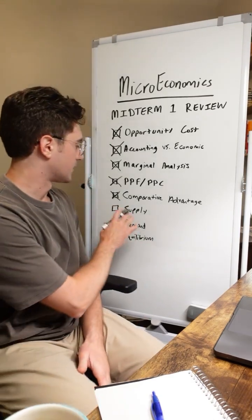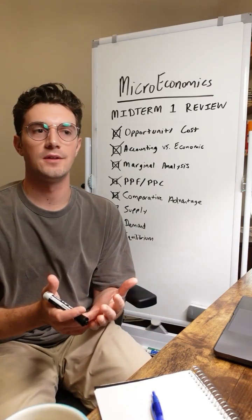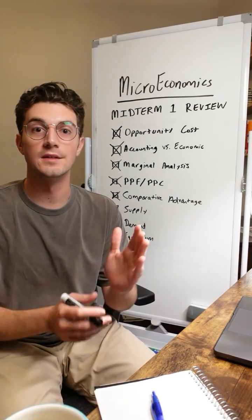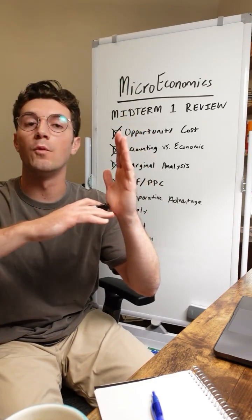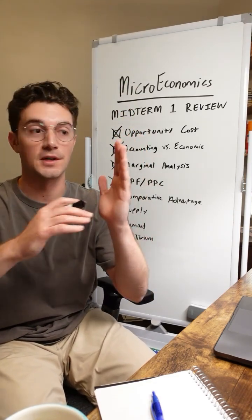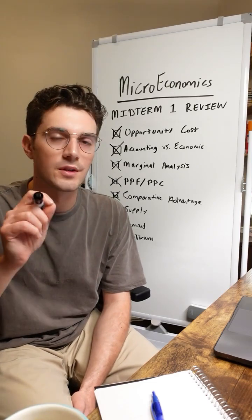All right, next up here is the supply curve. The big thing I want to take note of here is that it's upward sloping because as price increases along the y-axis, producers are willing to supply more units to the market on the x-axis. This follows the law of supply.